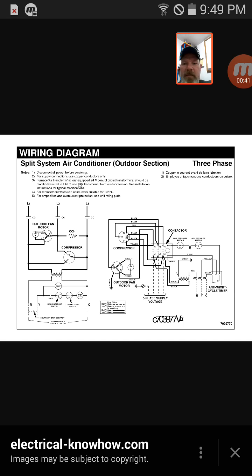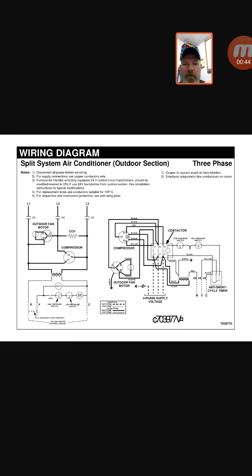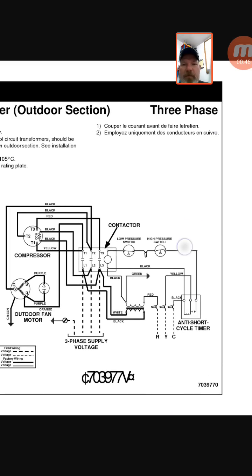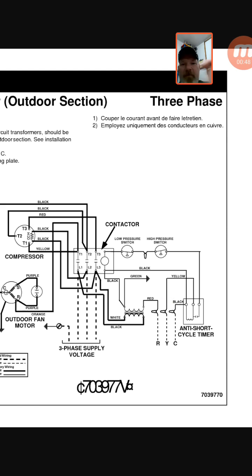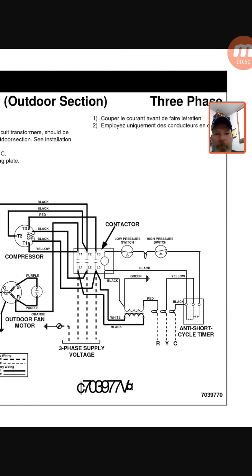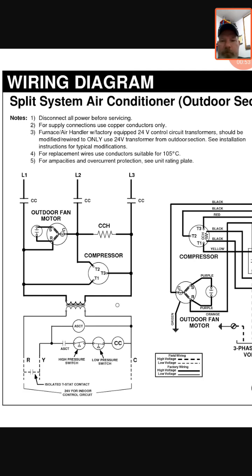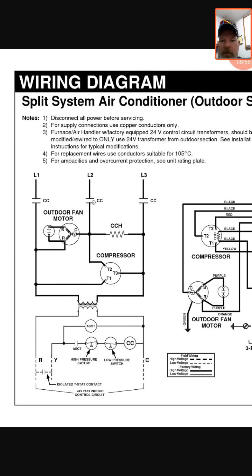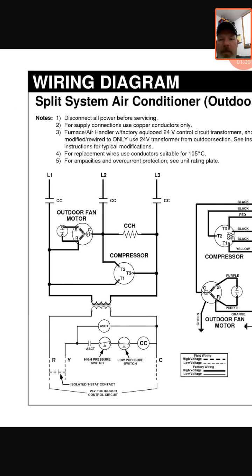We have a split system AC air conditioner outdoor section. Notice it says three-phase. This is a three-phase system, so you have L1, L2, and L3. L1, 2, and 3 come in from the disconnect, and again, this is the outdoor section of the air conditioner, so we're talking about the condenser fan, the compressor, and whatever other controls might be in there.